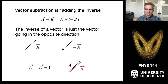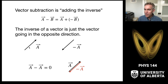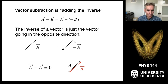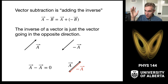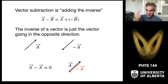Vector subtraction is just adding the inverse. The inverse of a vector is just the vector going in the opposite direction with the same length. So if a is here, negative a is there, and a + (−a) placed tip to tail gets you back to where you started. That means a + (−a) = 0. The zero vector is the vector with zero length — direction doesn't matter because it has zero length.